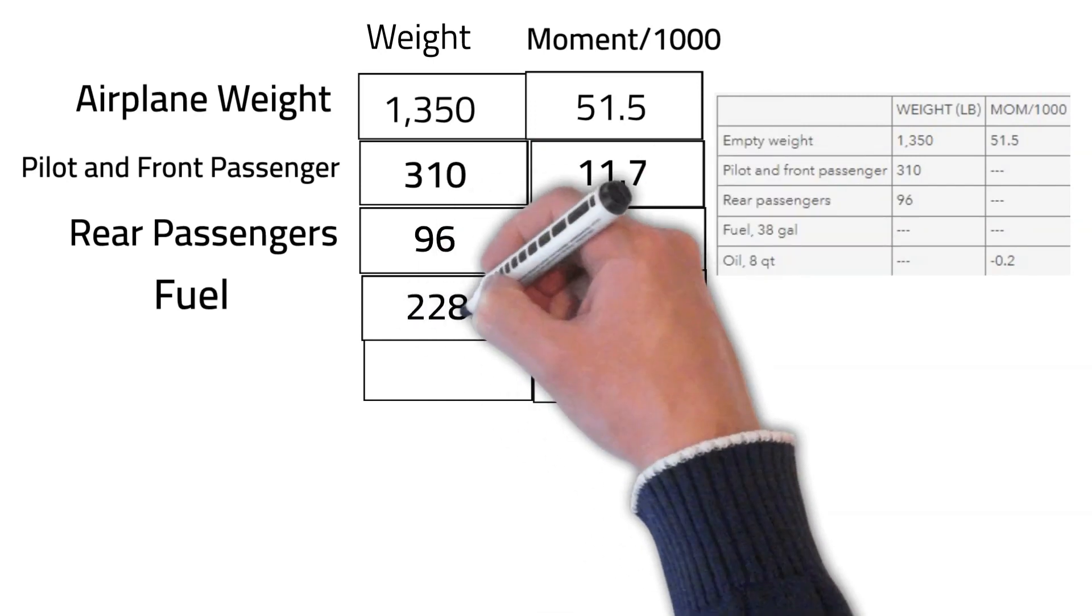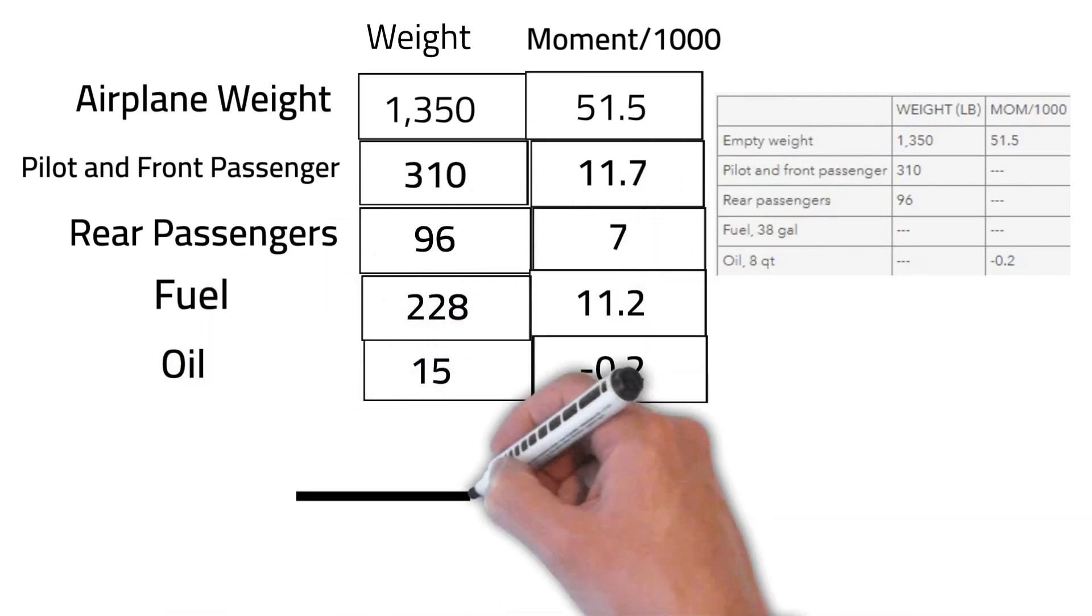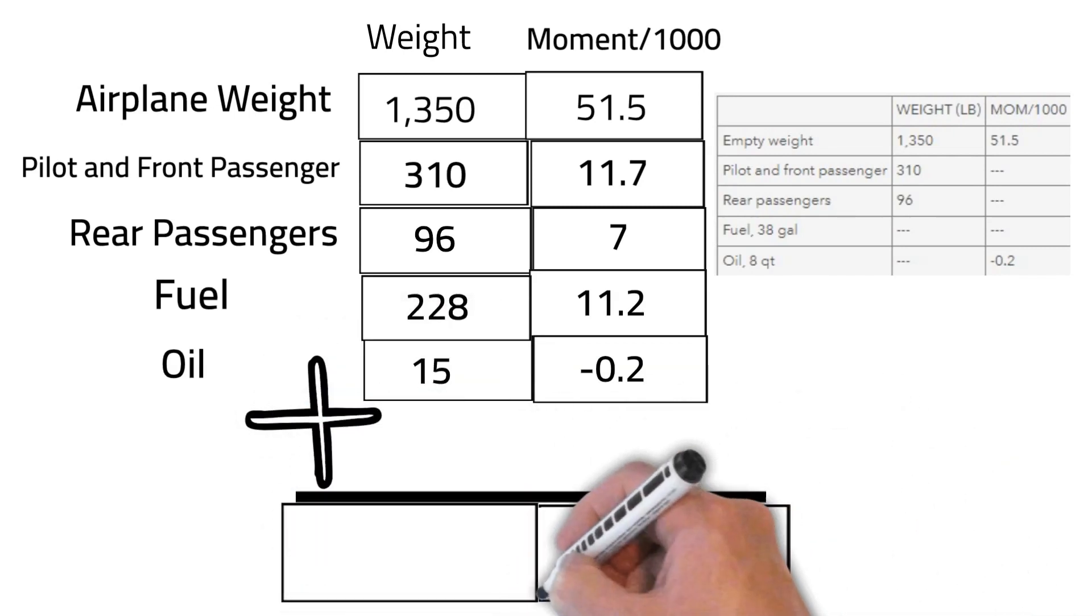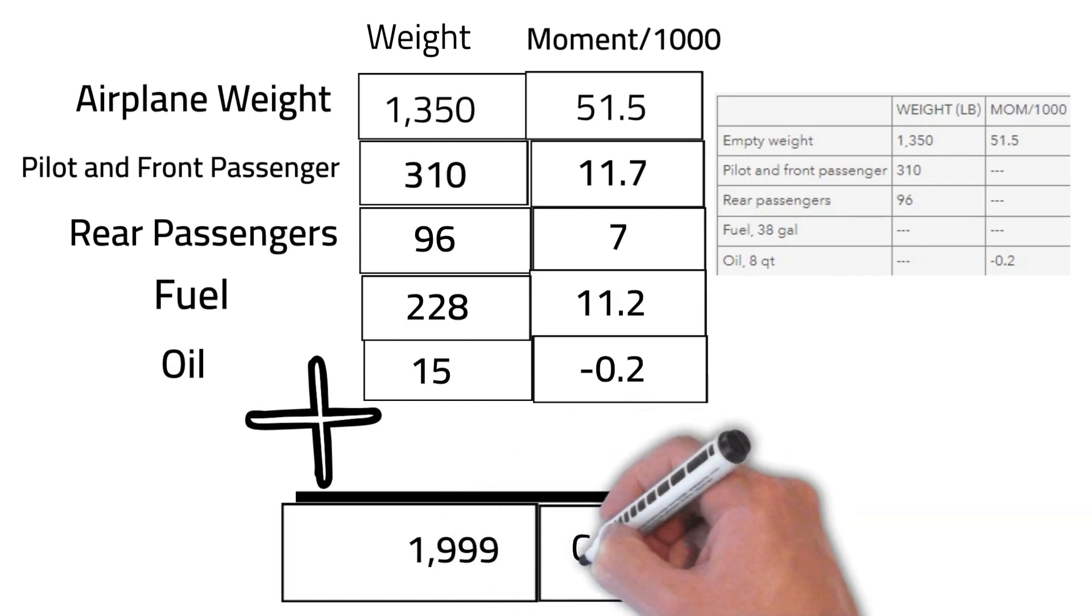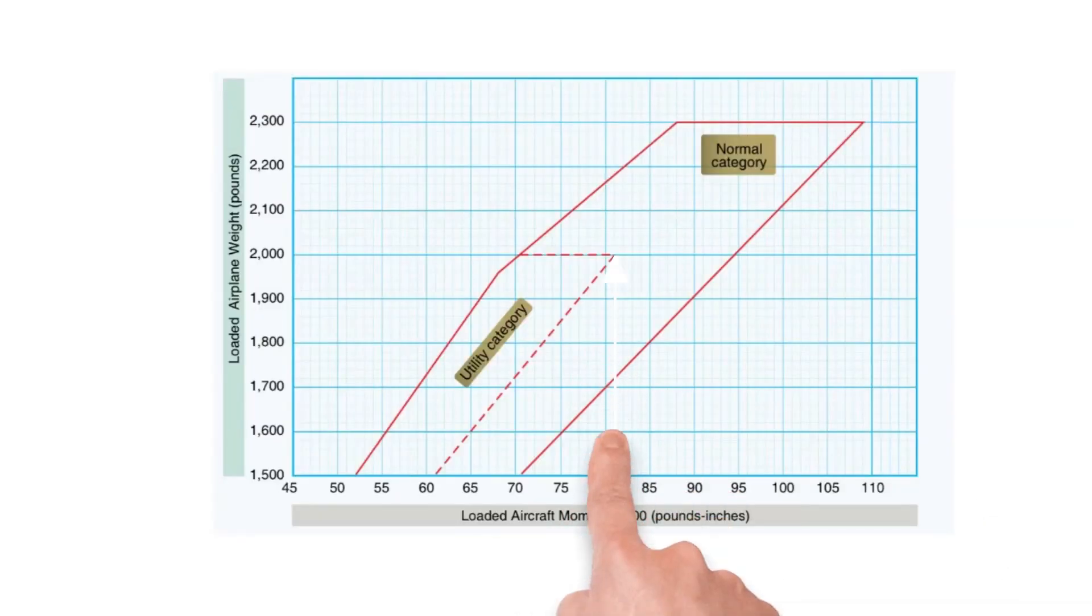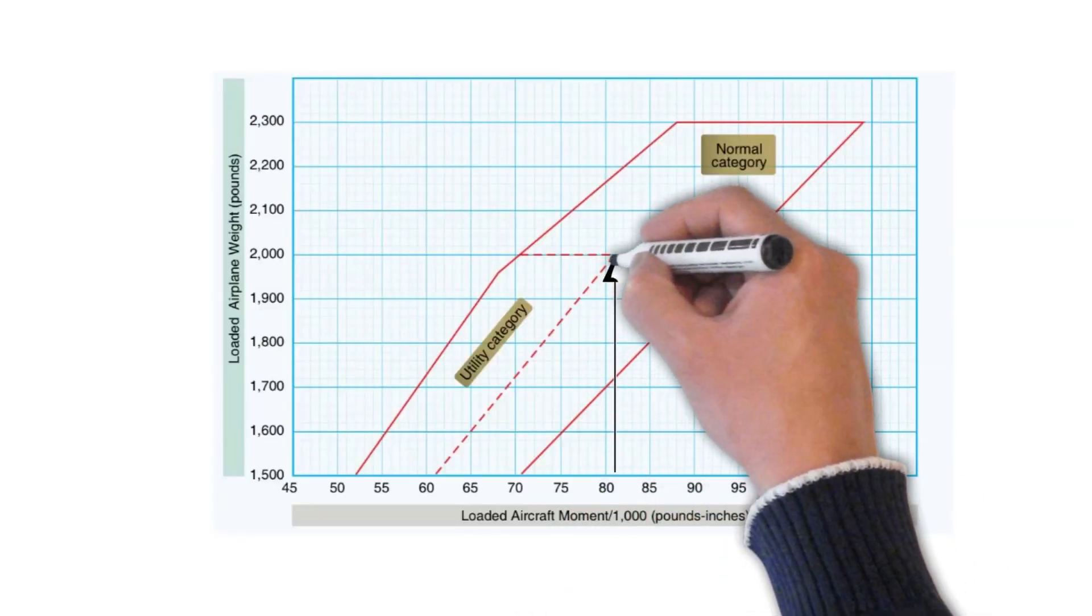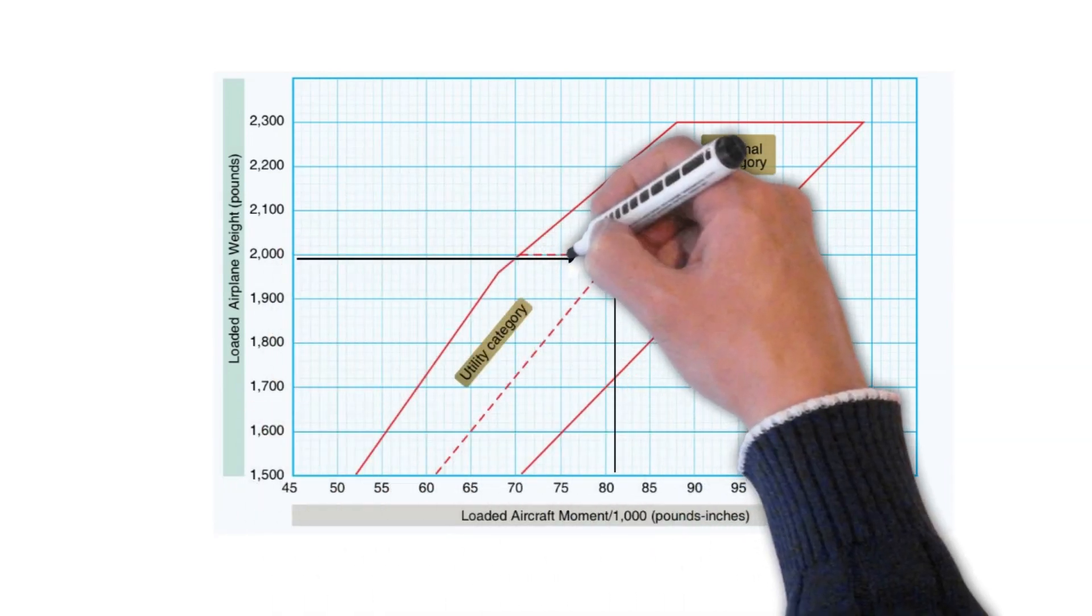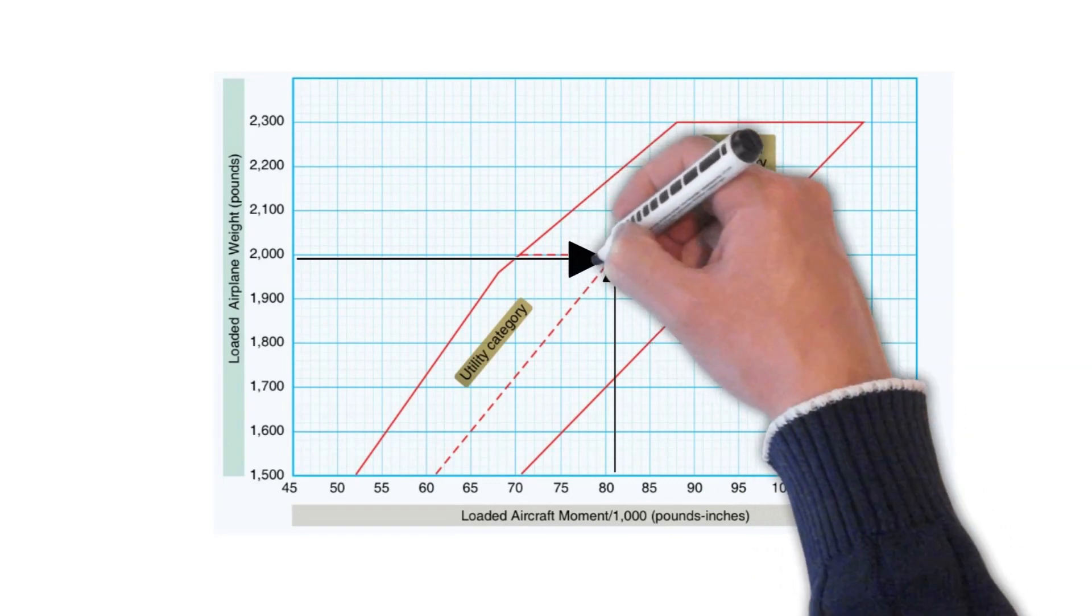We then add all the moment figures together and the weights to find the center of gravity, abbreviated CG. The weight is 1,999 pounds and the CG is 81.2. We then draw two lines.